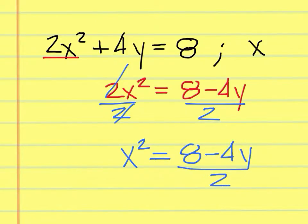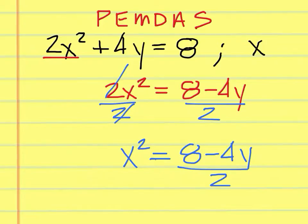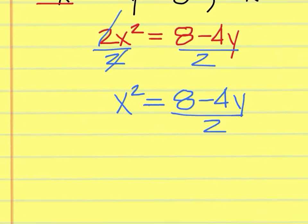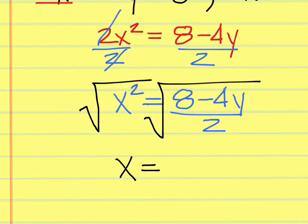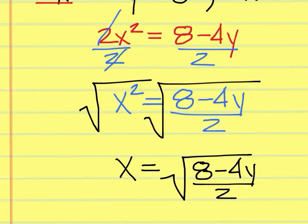The last thing we have to take care of would be the exponent. Remember the order of operations is parentheses, exponents, multiplication, division, addition, subtraction. We're going in reverse — taking care of addition and subtraction first, then undoing multiplication and division. The next one back is exponents, so to undo this exponent of 2, you have to do the opposite, which is the square root of both sides. The square root of x squared is x, and you're left with the square root of 8 minus 4y over 2.